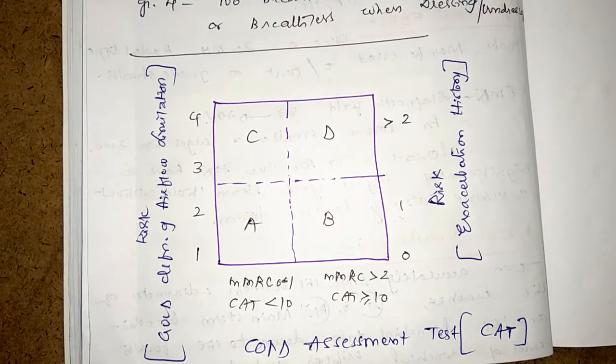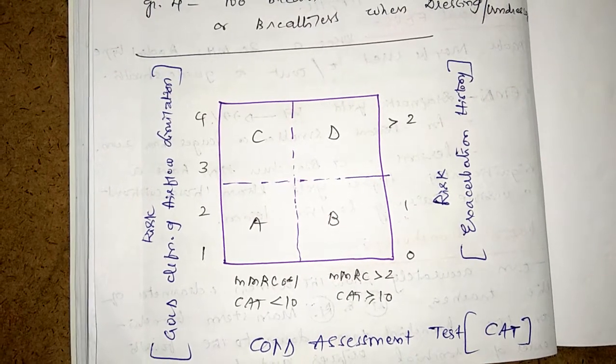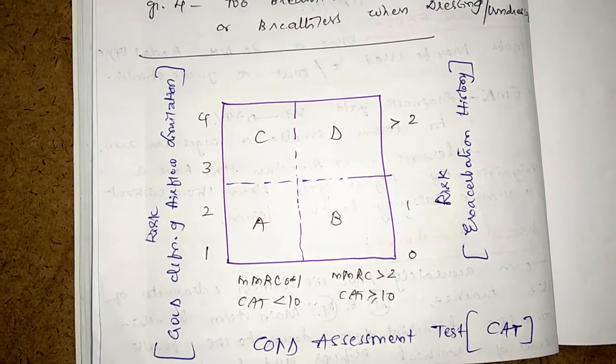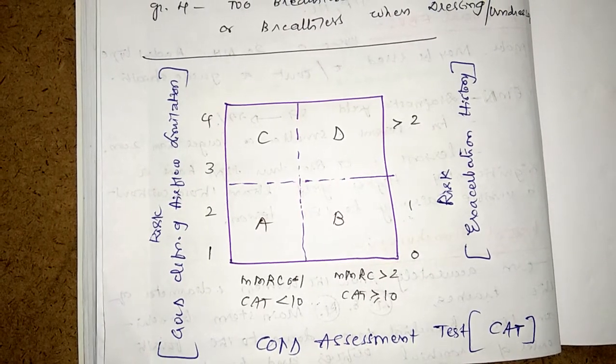Exacerbations per year: in A and B less than or equal to 1, in C and D more than or equal to 2 exacerbations per year.